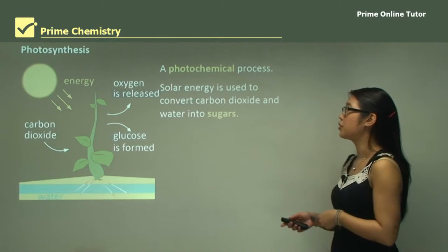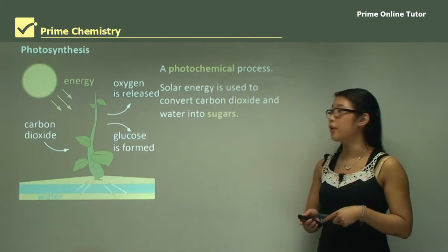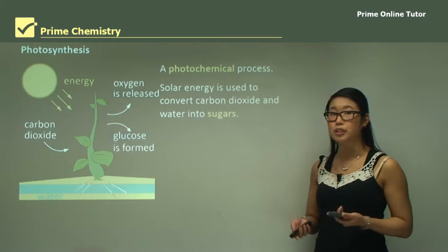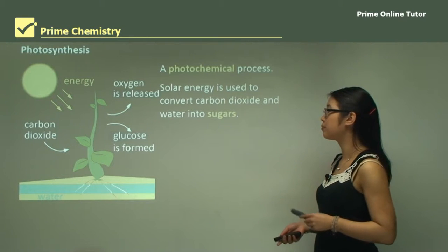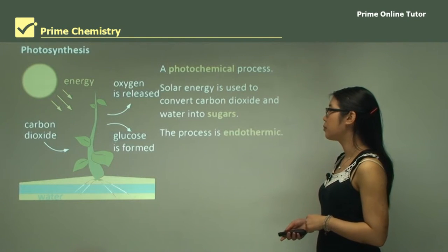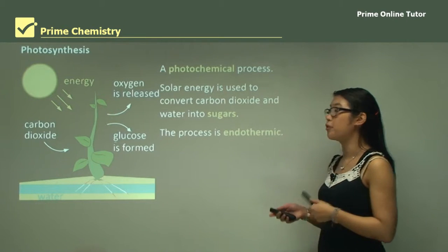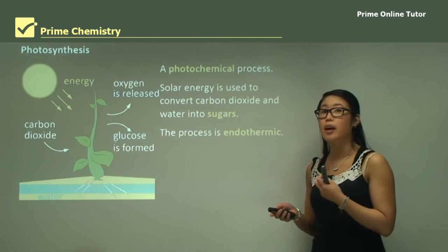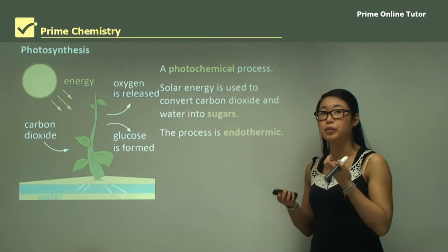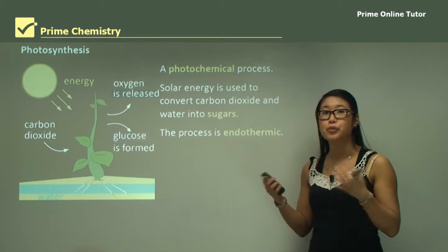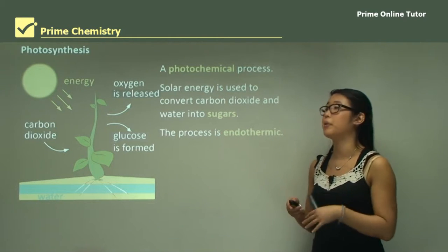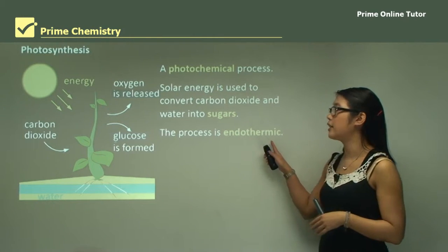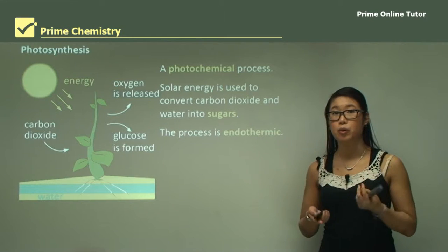Solar energy is used to convert carbon dioxide and water into sugars. The process is endothermic, so that means it's removing energy from the surroundings and using it in the chemical reaction — in this case it's using solar energy.